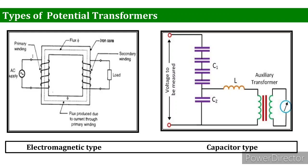The coupling capacitor type consists of a stack of series-connected capacitors made up of oil-impregnated paper and aluminium foil for the desired primary and secondary voltages. Primary and secondary terminals are connected across the capacitors. This is basically a capacitance voltage divider with a tuning inductance and an auxiliary transformer, as clearly shown in the figure. The primary portion consists of capacitors connected in series to split the primary voltage to convenient or desired values.